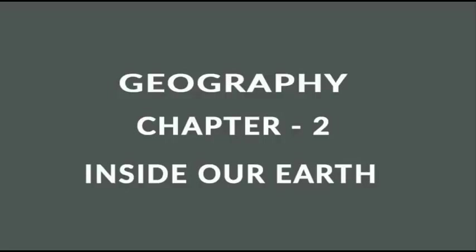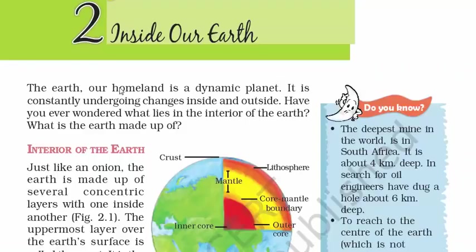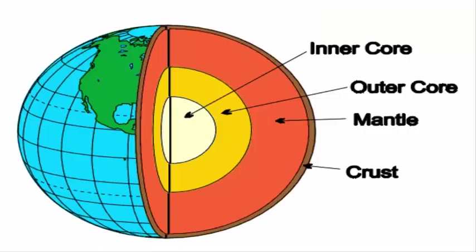Hello everyone, I'm back with another chapter of Geography Class 7 NCERT, Chapter 2: Inside Our Earth. There is always a constant change going on underneath our feet, inside the earth. We may not notice it from outside, but there is a constant change going on. This chapter is all about the interior of the earth — what the earth is made up of and what kind of rocks and minerals it contains.